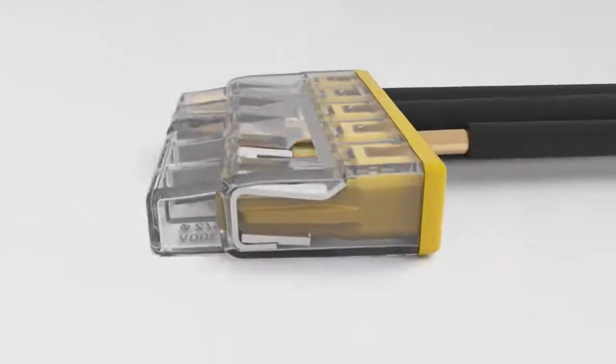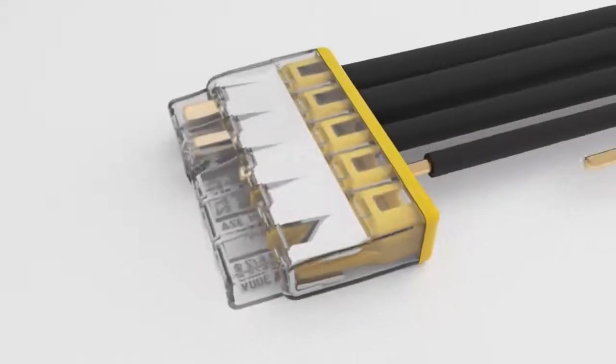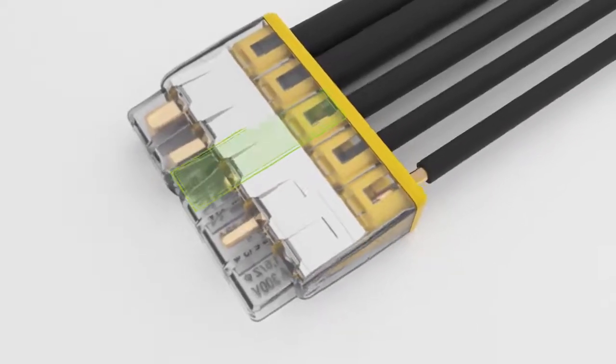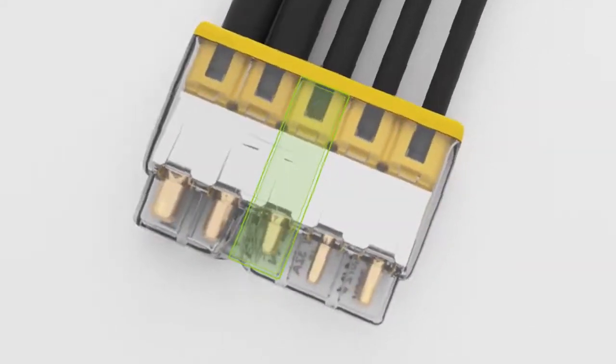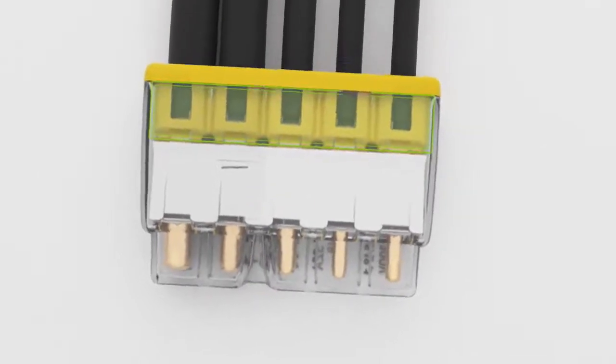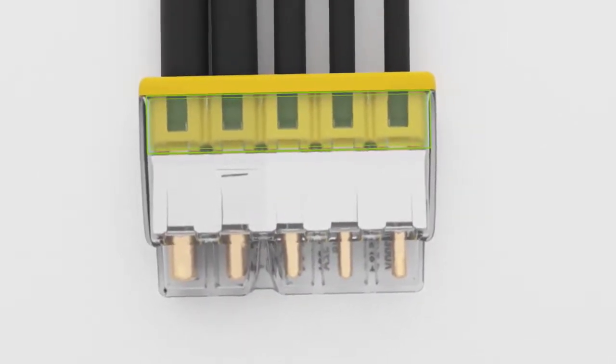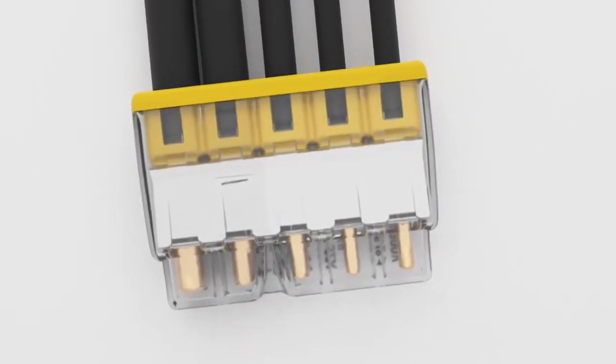The transparent housing permits visual inspection of the conductor position. If conductors are not inserted far enough they're easily identified. The viewing port in the housing on the non-labeled side allows incorrectly stripped conductors to be easily recognized.